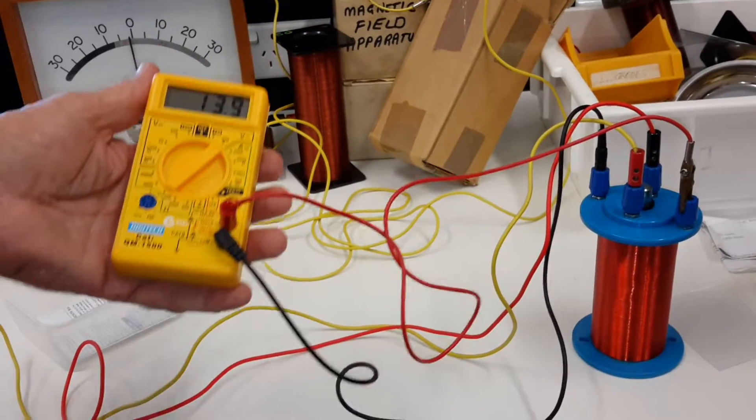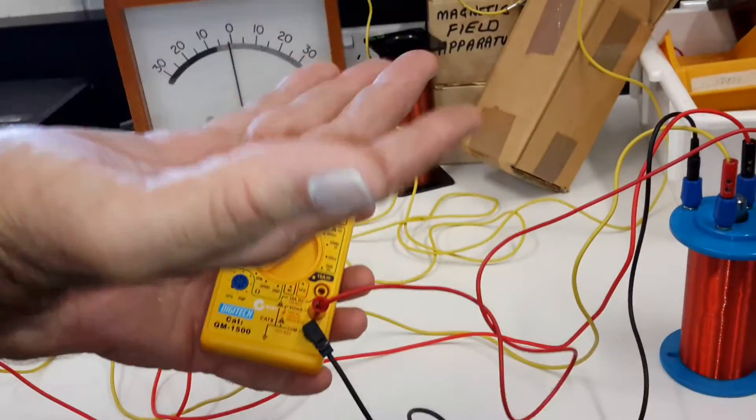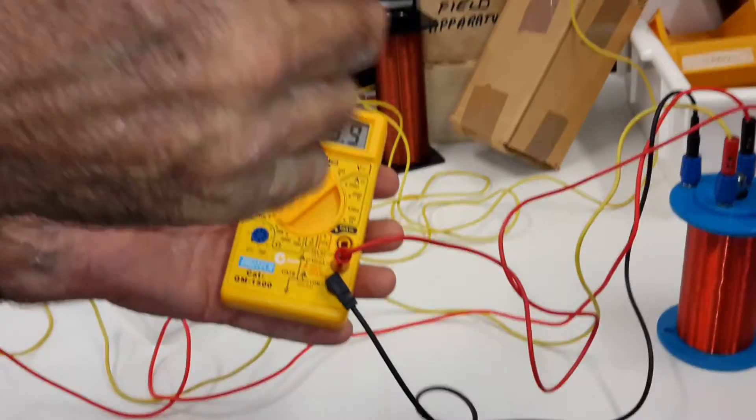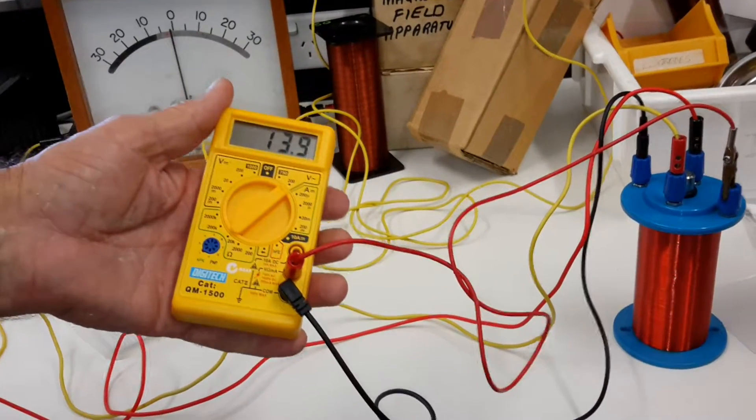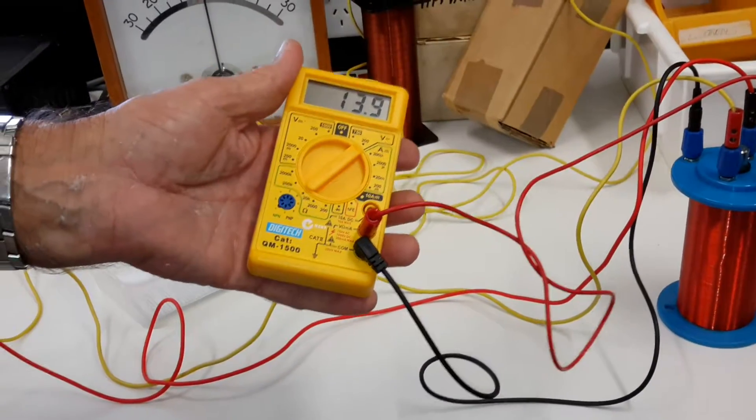We're going from 5 volts up to nearly 14 volts. And you might think we're making electricity. Well, that's not true. The voltage is going up, but the current is coming down. You can't create energy. Remember, the total power is V times I.